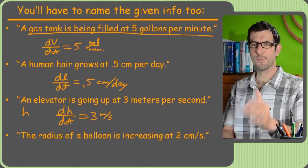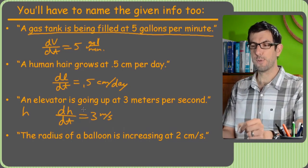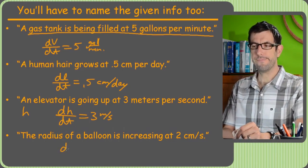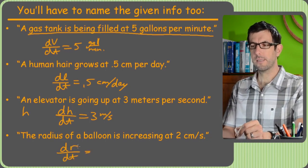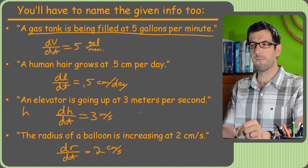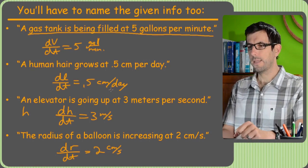Now don't worry, we'll get lots more practice with this. I just want to sort of drill in the point here which everything is a derivative with respect to T. The radius of a balloon is increasing at two centimeters per second. Hmm. dR/dt, right? Because the rate of change of the radius and they're saying that's at two centimeters per second. Now there's just information we end up plugging into the problem and we'll see how that works in the next video.